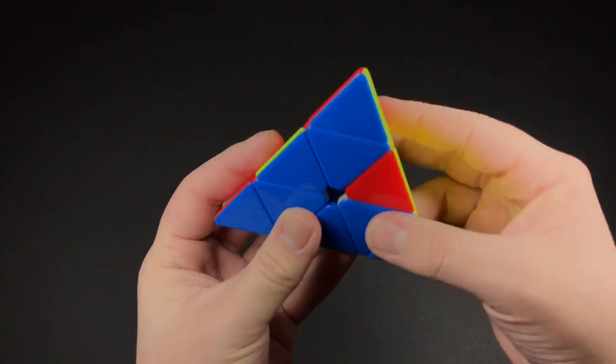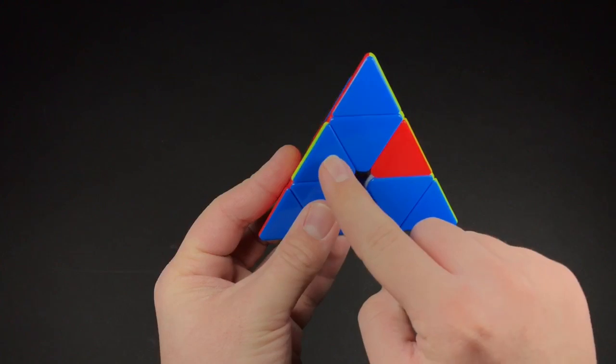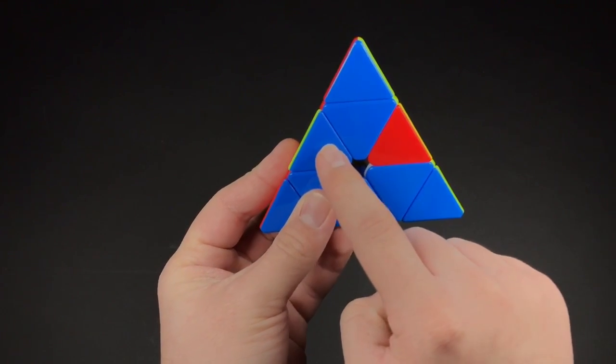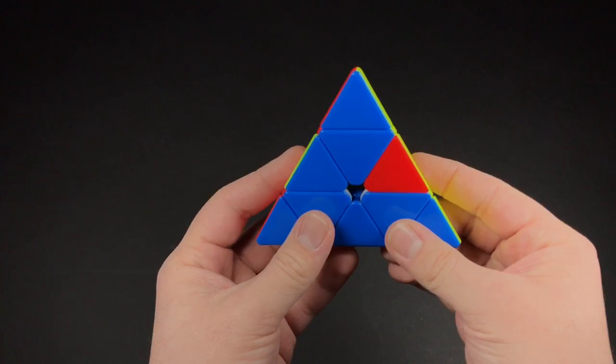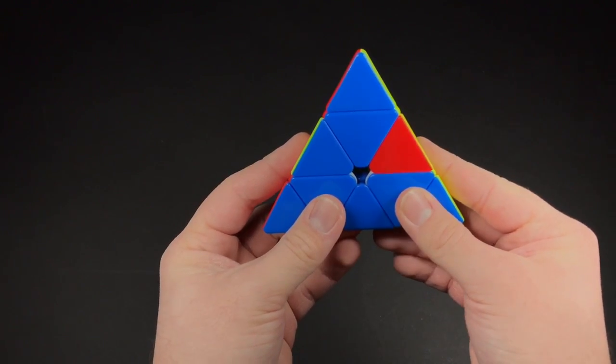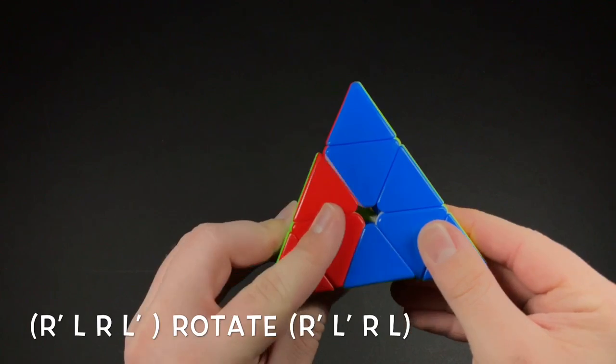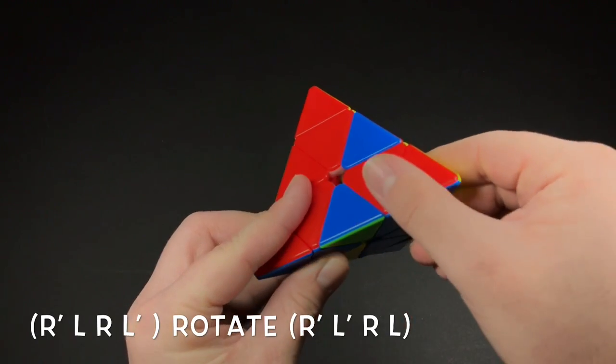So I put this one in the back, and then I look for whichever one is in front. So it's the one on the left. So I would do this algorithm. Do kind of a rotation.